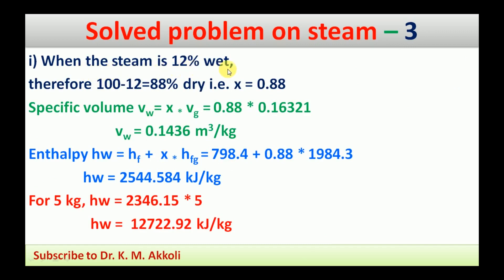For Case 1, when the steam is 12% wet, it is 88% dry. Therefore the dryness fraction x = 0.88. The specific volume of wet steam is v_w = x × v_g = 0.88 × 0.16321 = 0.1436 m³/kg.